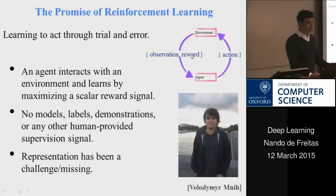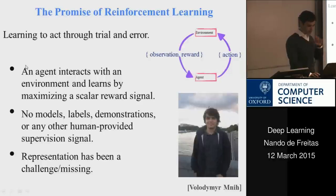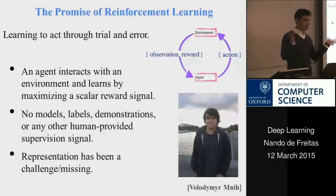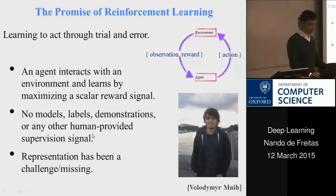The measure of performance — the reward signal — is not always obvious; it's very hard to quantify rewards. The agent interacts with the environment, receives reward signals and other observations, and by trial and error learns how to act. It learns strategies — called policies — of how to act so as to maximize returns over time.